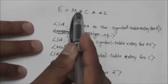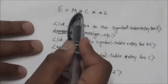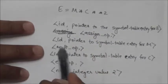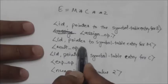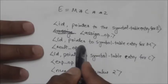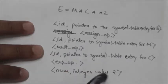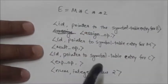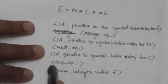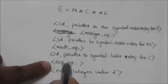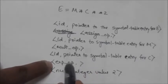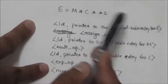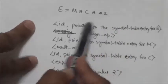Now you can see this asterisk — it is a multiplication operator. The token for this asterisk is the multiplication operator, and there is no attribute value associated with this token. Similarly, the double asterisk is an exponent operator. The token for this exponent operator is generated, and again there is no associated attribute value.